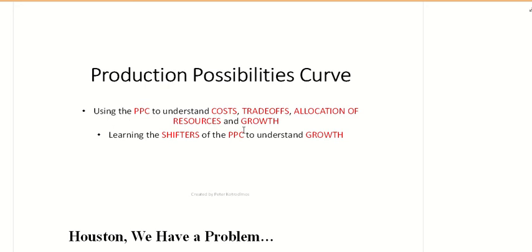So let's do a real quick lecture and we'll kind of talk about the production possibility curve and what it means. So if you've gone ahead and listened to the podcast, which I would suggest you do first, it talks about opportunity costs, trade-offs, sunk costs, and the allocation of resources.